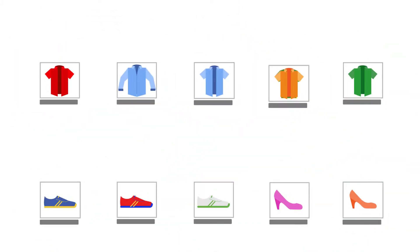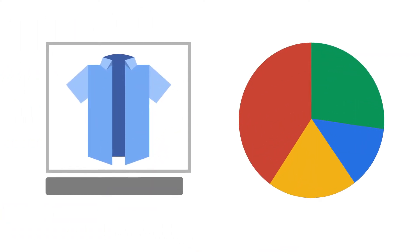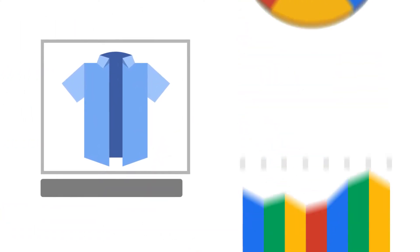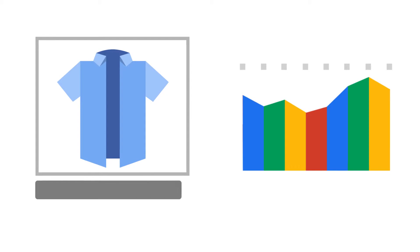Regardless of how you organize your product groups, you can sort and view your campaign performance by different attributes. You can even see performance data for each individual item.